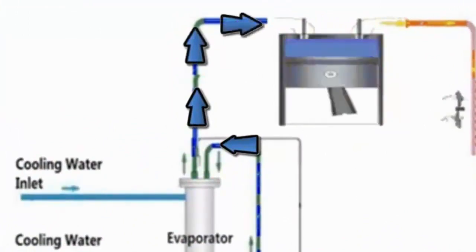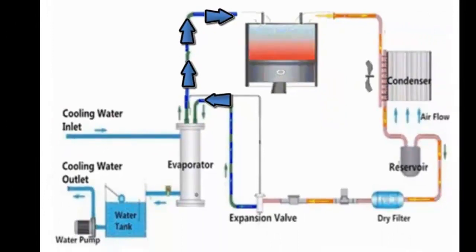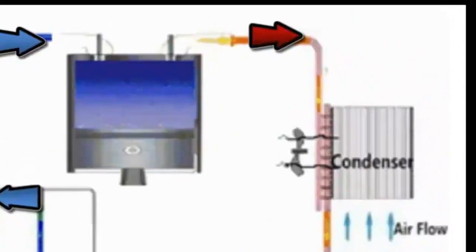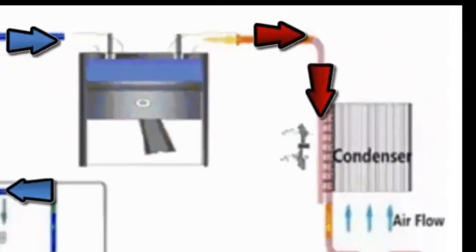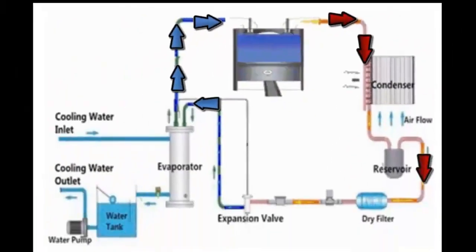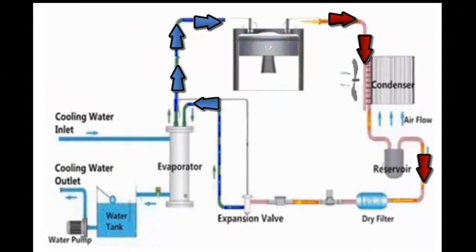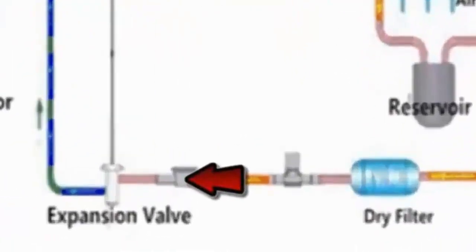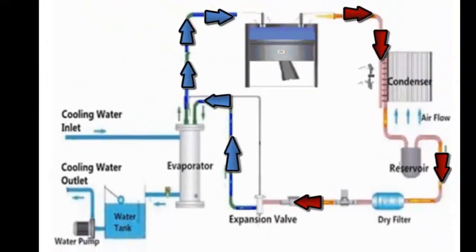E. The refrigerant gets pressurized in the compressor to be taken to the condenser. F. In the condenser, the heat that was removed from the ice water is released. G. The refrigerant passes through the expansion device to lower its pressure and become cold again. H. The refrigerant enters the evaporator and the cycle is repeated.